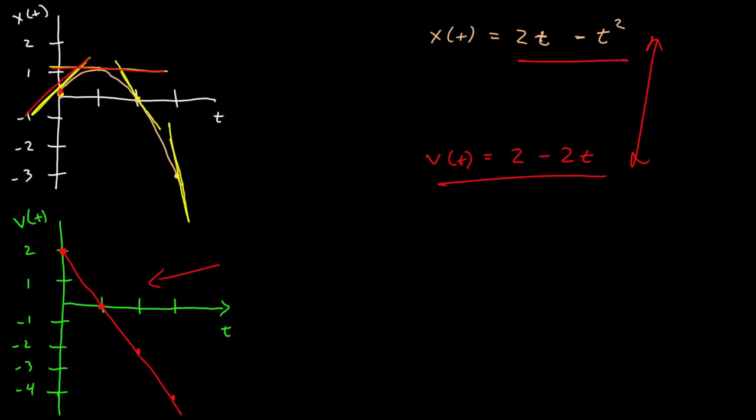It has a negative 2 slope at t is equal to 2, and has a negative 4 slope at t is equal to 3. So the qualitative understanding of the tangent line by looking at the position graph is consistent with what I calculated by looking at the graphical representation of the velocity as a function of time.